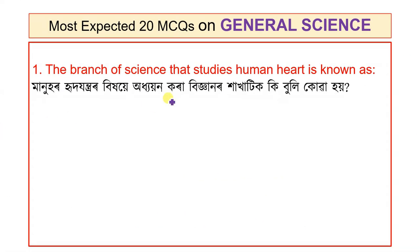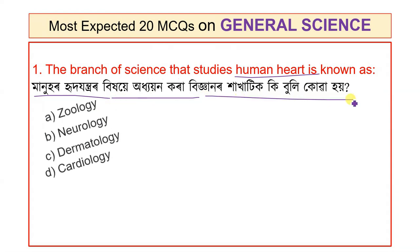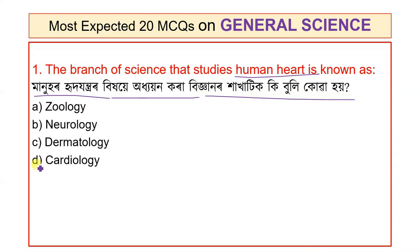Question 1: The branch of science that studies the human heart is known as — options: Edicardiology, Neurology, Dermatology, and Cardiology. The answer is Cardiology. Cardiology is the branch of science related to the human heart.